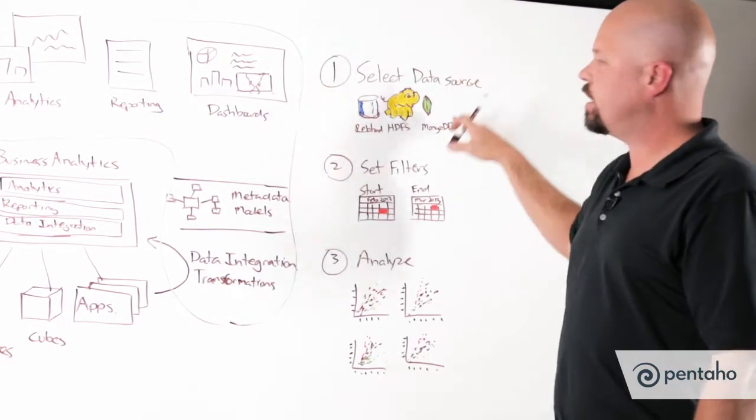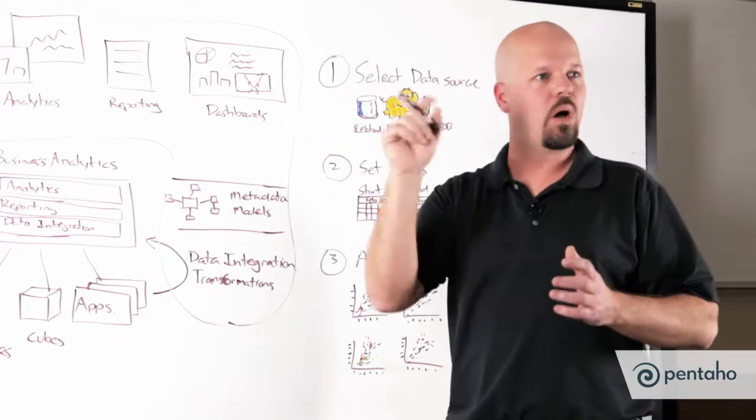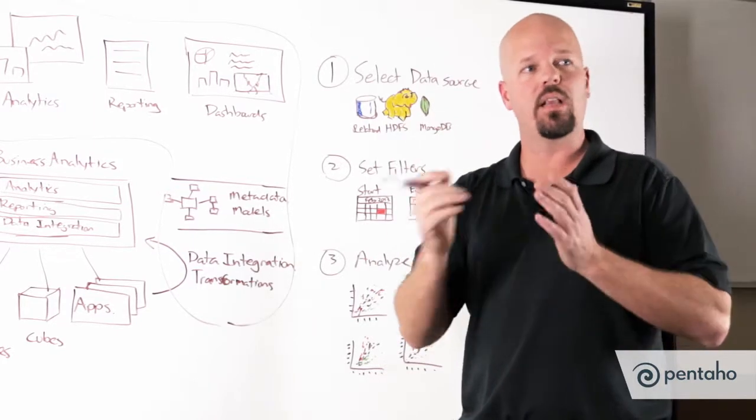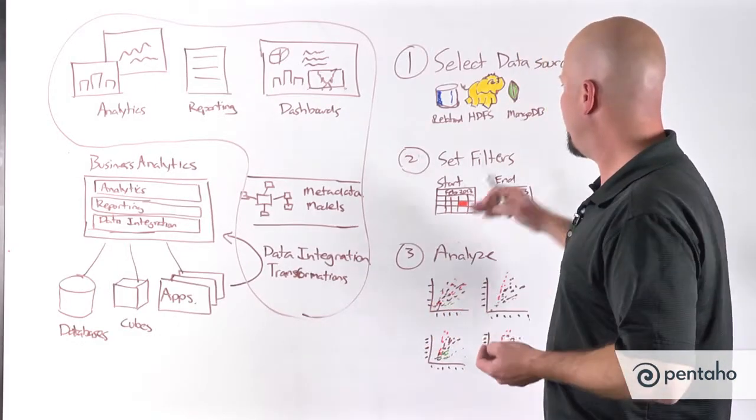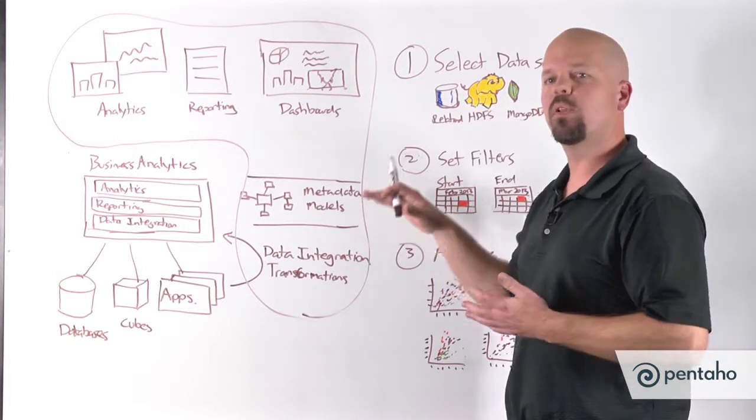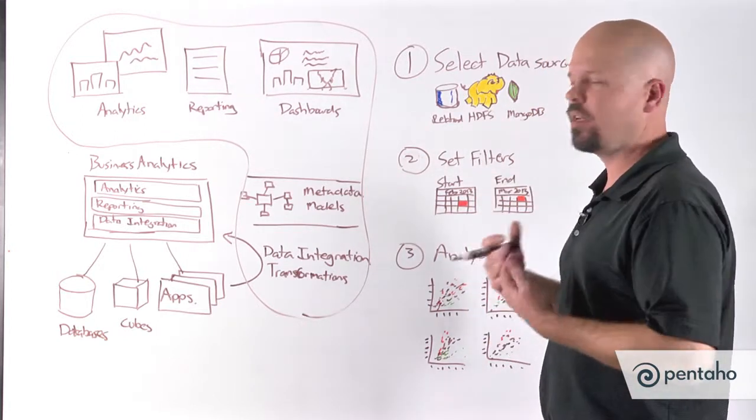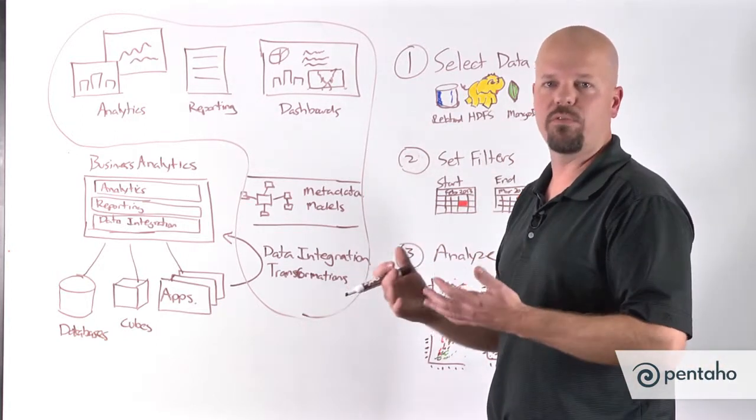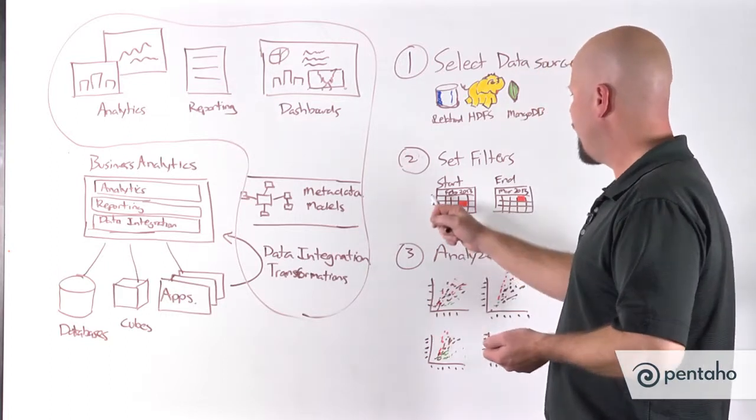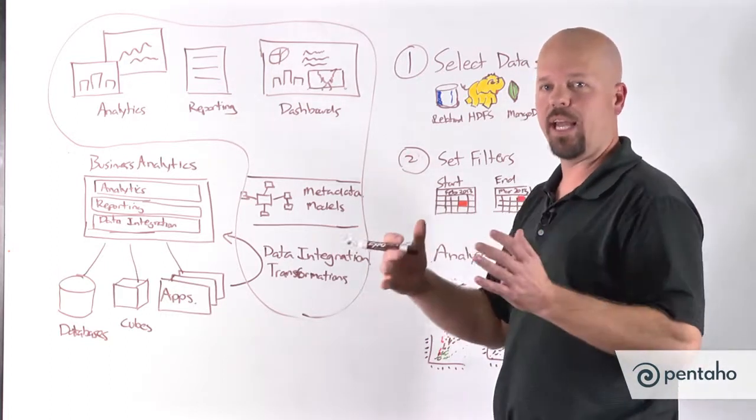So what you would see in InstaView is a very simple, I want to open up a new InstaView analytics, point to the data that you want to access. And then you may, depending on how that template is set up, you may be presented as an end user with a series of filters. So that might be something as simple as, you want to pick the start and end range for the amount of data that you want to analyze.